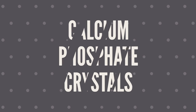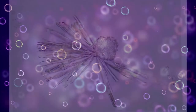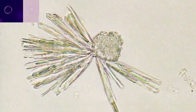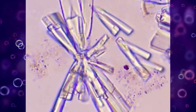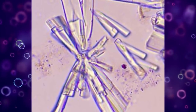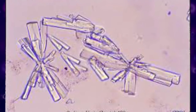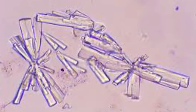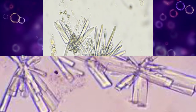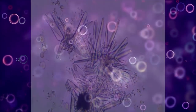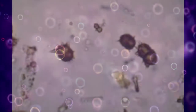Calcium phosphate crystals are colorless crystals having a shape like blunt-ended needles or prisms and rosettes. These crystals are found in neutral to alkaline pH. Their appearance is also called sheets of ice.